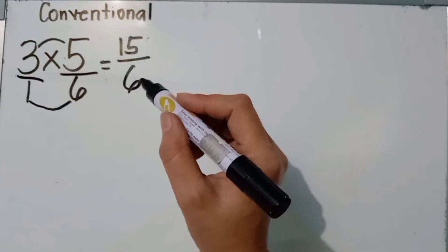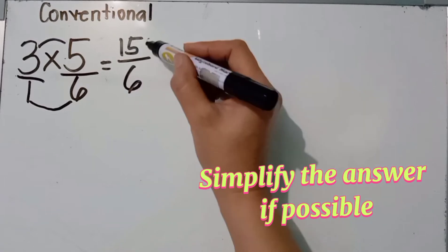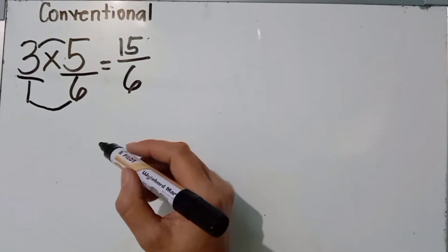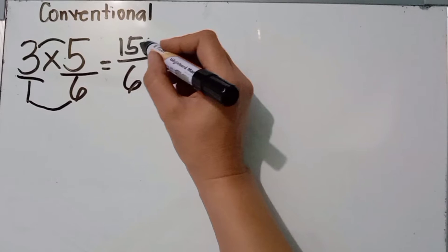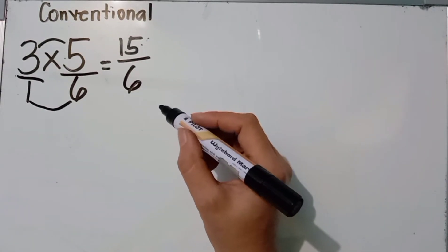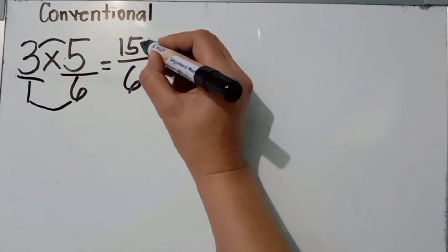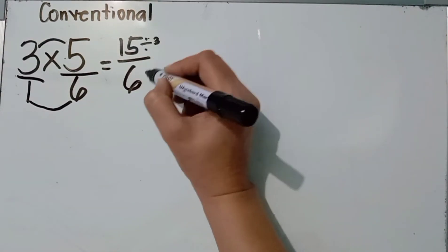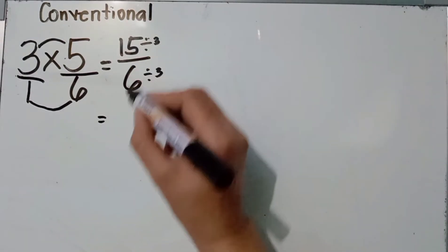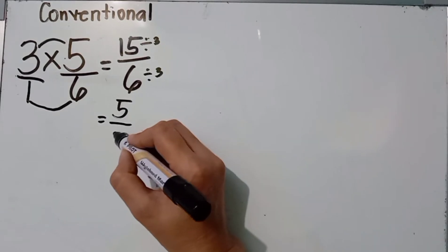The last step is to simplify the answer if possible. Is fifteen over six already in lowest terms? No, because they have a common factor. Their greatest common factor is three. So we divide both by three: fifteen divided by three is five, and six divided by three is two.